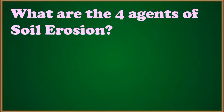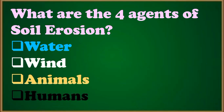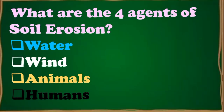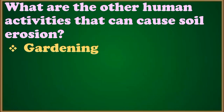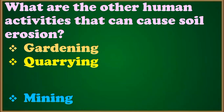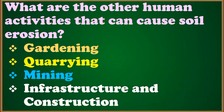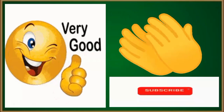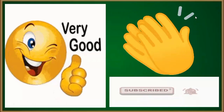The four agents of soil erosion are water, wind, animals, and humans. What are the other human activities that can cause soil erosion? Gardening, quarrying, mining, and infrastructure and construction. Very good — you have answered the questions correctly. That is the end of our lesson.